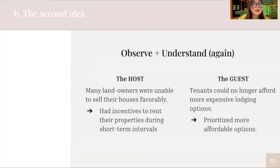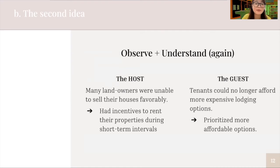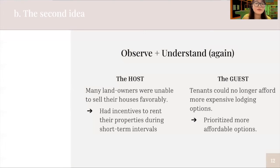This means that landlords had a clear incentive to rent their properties during short-term intervals as one way to monetize. Even for normal people, the incentive to monetize part of their property was high given the financial crisis. In the case of the Airbnb founders, they were themselves tenants who suffered due to higher rent, and Airbnb originated from an idea to afford their rents — meaning they looked at this problem both as insiders and as founders.